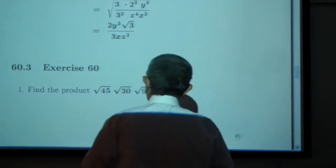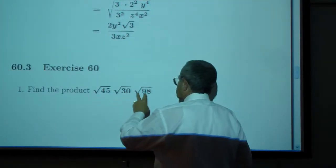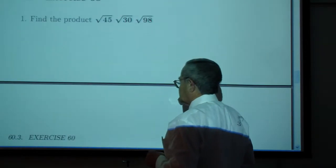Exercise 1. Find the product: square root of 45 times square root of 30 times square root of 98.